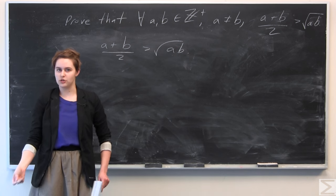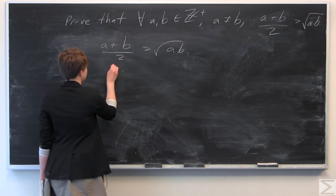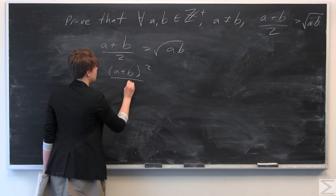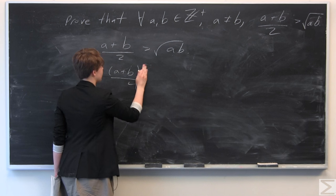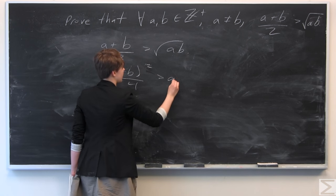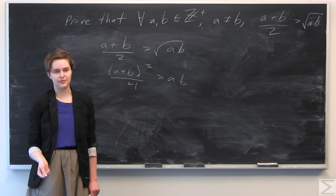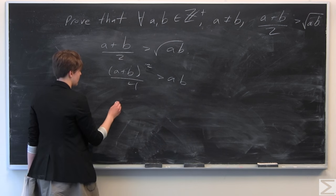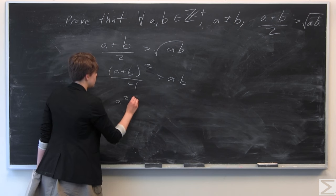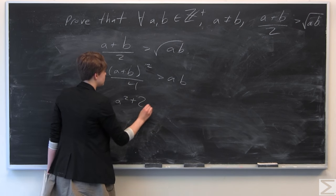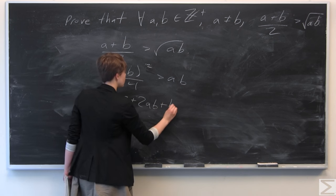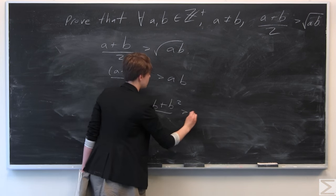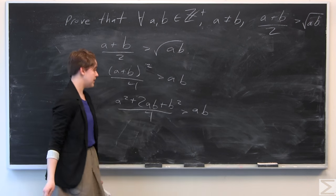The first logical step is to square both sides. We get a plus b, quantity squared, over 4, is greater than ab. We can simplify the numerator: a plus b quantity squared equals a squared plus 2ab plus b squared, all over 4, and that's greater than ab.